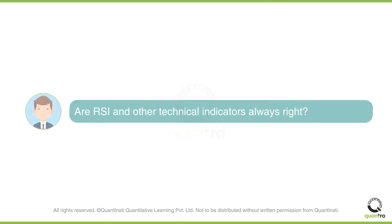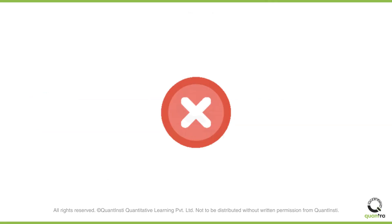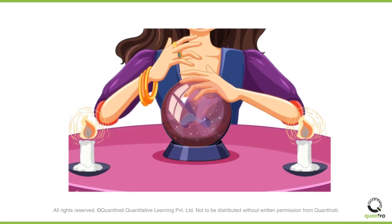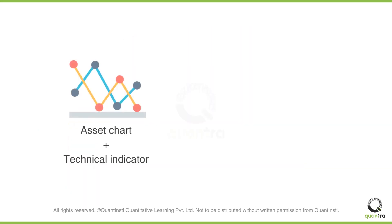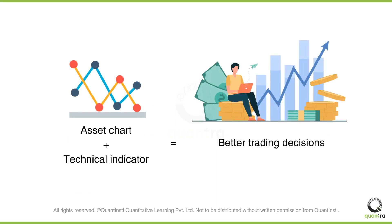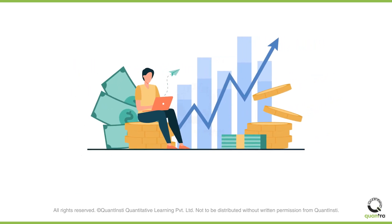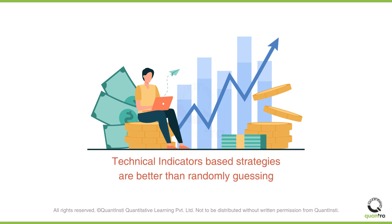Are RSI and other technical indicators always right? No — nobody can accurately predict the market's movement, but technical indicators assist us in making trading decisions. Strategies based on technical indicators have given substantial returns for many years to traders, so they are better than randomly guessing where the market will move next.